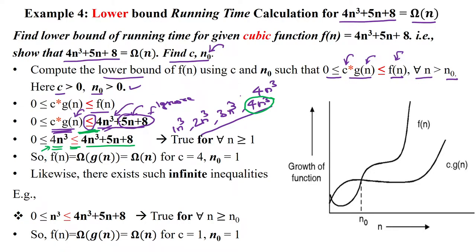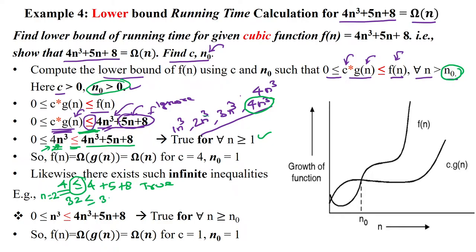Now we substitute the initial input size as a positive number, starting from n=1. When substituting n=1, we get: 4 ≤ 4·1 + 5·1 + 8, which is 4 ≤ 17. This is true with respect to the less-than-or-equal condition. When substituting n=2, we get 4·2³ = 32 ≤ 32 + 10 + 8 = 50. This is also true. So from n ≥ 1 onwards, this condition holds for all values of n.